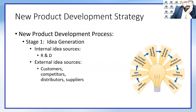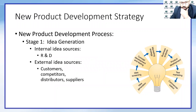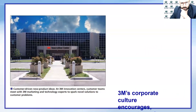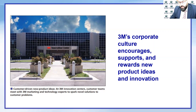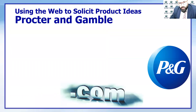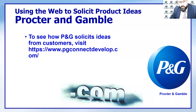Stage one is idea generation, which could come from internal sources such as research and development efforts, or from external sources through your supply chain — such as customers, competitors, distributors, or suppliers. Some companies like 3M encourage, support, and reward new product ideas and innovation. P&G has also developed a website to encourage people to submit ideas to them.